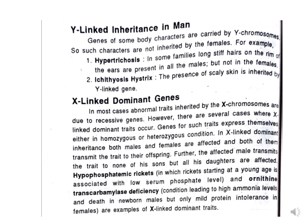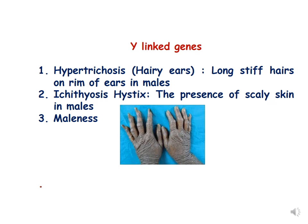There are also examples of X-linked dominant genes. These do not follow criss-cross inheritance and will be visible in every generation. Examples include hypophosphatemic rickets and transcarbamylase deficiency. Y-linked associated genes include hypertrichosis and ichthyosis hystrix — the presence of scaly skin in males. Please read your textbooks for detailed knowledge of all these conditions.